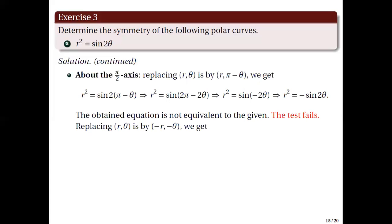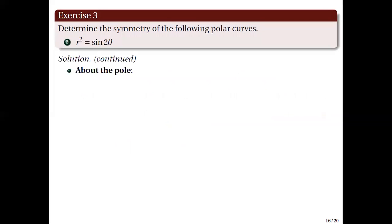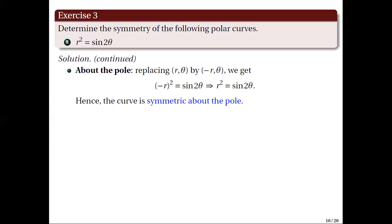Using the second test for symmetry about the pi over 2 axis, we get negative r squared equal to sine of negative 2 theta, which is equivalent to r squared equal to negative sine 2 theta. Again, the obtained equation is not equivalent to the given, hence the test fails. Again, no conclusion can be made regarding symmetry of this type. Testing symmetry about the pole, we get negative r quantity squared equal to sine 2 theta, which is equivalent to r squared equal to sine 2 theta. Hence, the curve is symmetric about the pole.